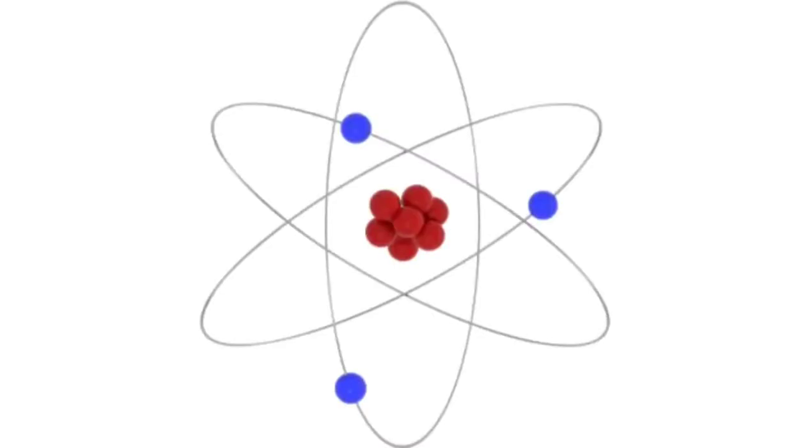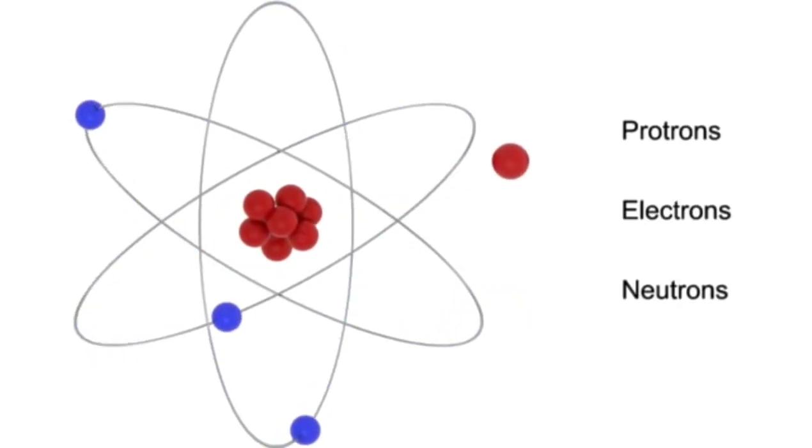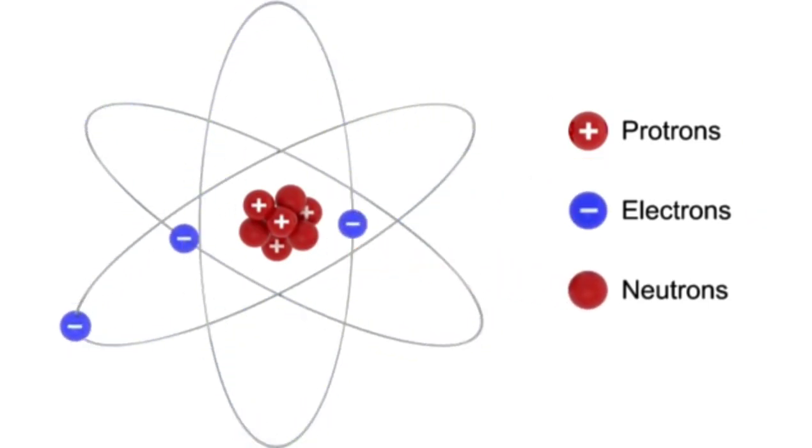Atoms make up all of the Earth's matter. Atoms can be broken down into three basic components: positively charged protons, negatively charged electrons, and neutrally charged neutrons.